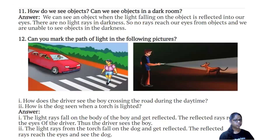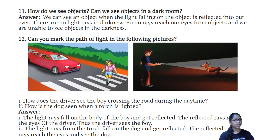How do we see objects? Can we see objects in a dark room? We can see an object when the light falling on the object is reflected into our eyes. There are no light rays in darkness, so no rays reach our eyes from objects and we are unable to see objects in the darkness.